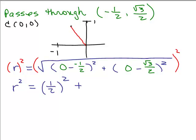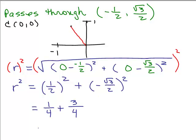Over here we have 0 minus square root of 3 over 2 squared, which is negative square root of 3 over 2, squared. What's 1 half squared? That's 1 half times 1 half, which is 1 fourth. And what's negative square root of 3 over 2 squared? Well, squaring a negative makes it positive. Square root of 3 times square root of 3 is 3, and 2 times 2 is 4. So we get 1 fourth plus 3 fourths, which is 1. So r squared is simply 1.